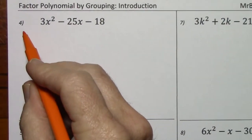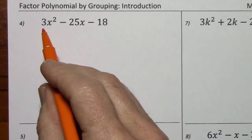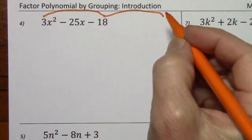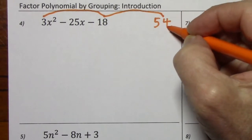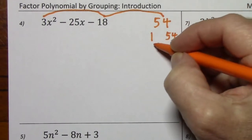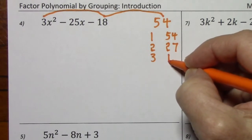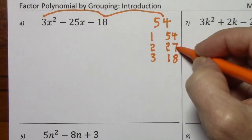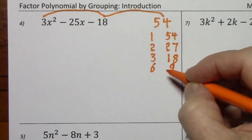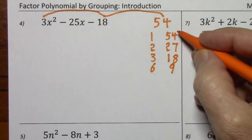Looking at number 4, we have no GCF other than 1. Three terms with leading coefficient other than 1, so we'll use factor by grouping. Multiply first times last — this gives us 54 — and now we'll list all the factor pairs. 4 won't work, can't cut that in half. 5 won't work. 6 works because I can cut that in half. 7 won't work. 8 won't work. And I already have 9. Here are all the factor pairs.